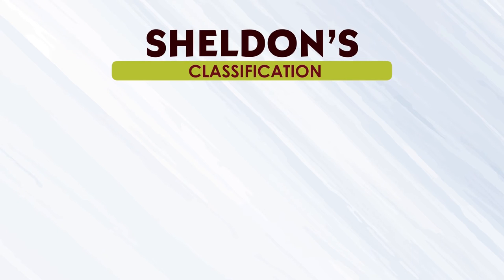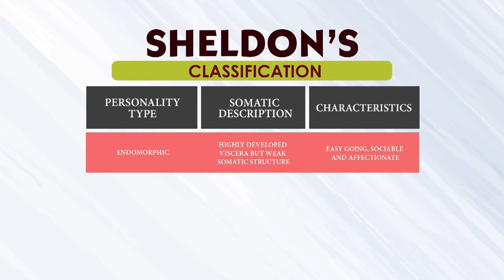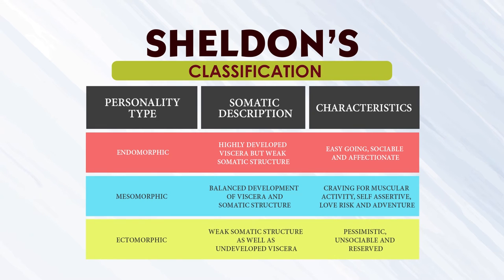Another classification is given by Sheldon. He has given a clear classification of endomorph, mesomorph, and ectomorph — again based on somatic description. Endomorphic people have highly developed viscera, meaning internal organs, but weak somatic structure. They are easy-going, sociable, and affectionate. Mesomorphic people have balanced development of both viscera and somatic structure. Their characteristics are craving for muscular activity, mostly sportsmen, self-assertive — they love risk-taking and adventurous activities. Ectomorphic people have weak somatic structure as well as undeveloped viscera. These people are pessimistic, unsociable, and reserved.